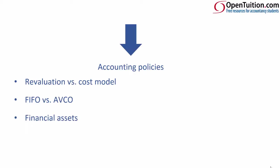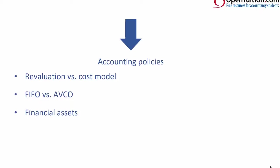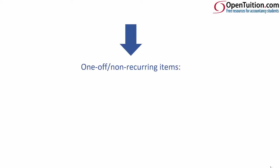The other one to consider is financial assets. You have a choice about where you take gains or losses — they could go to profit or loss, or through other comprehensive income. Again, if you're comparing one entity to another, you could have different performance based upon where those gains or losses are taken. We can also consider one-off or non-recurring items. It's important to consider these when looking at your analytical review, because if something arises in one year and not the next, it will be beneficial to remove those one-off items from your analysis to get a more accurate year-on-year picture.